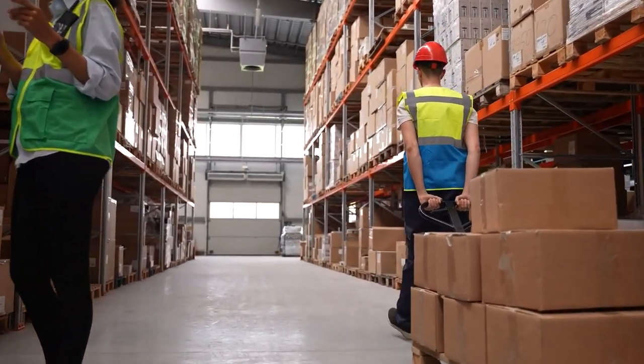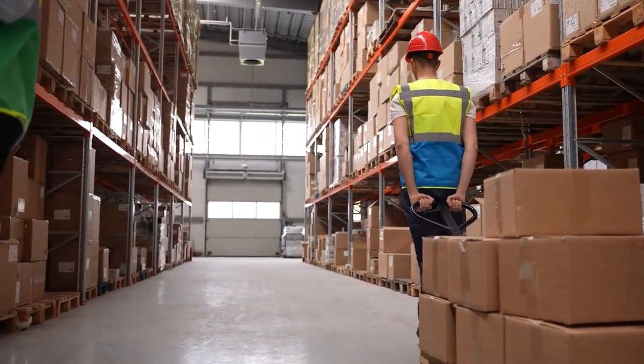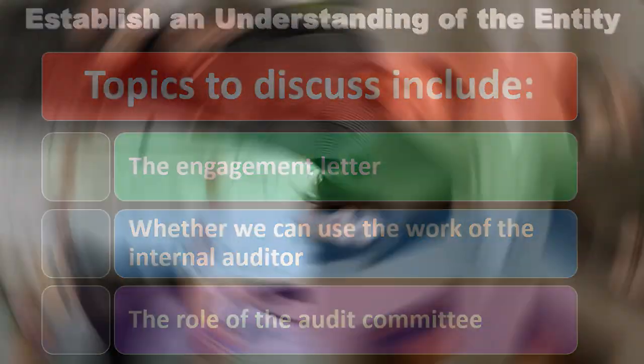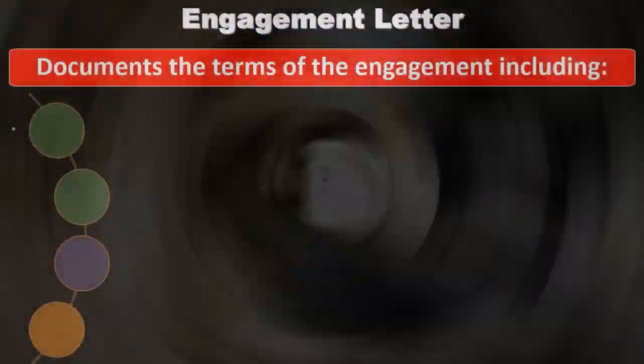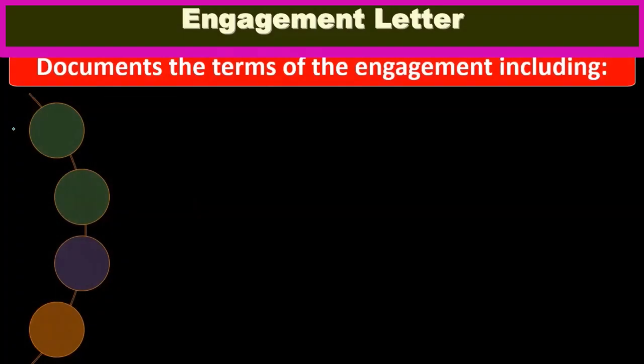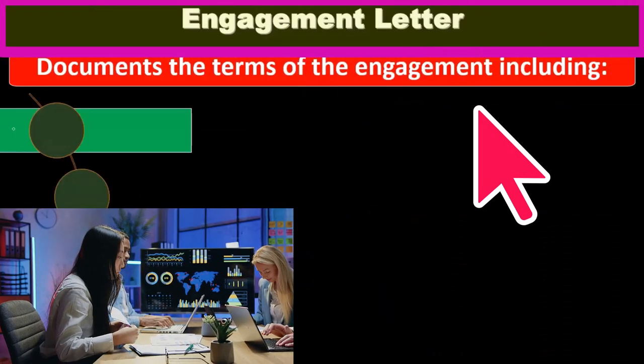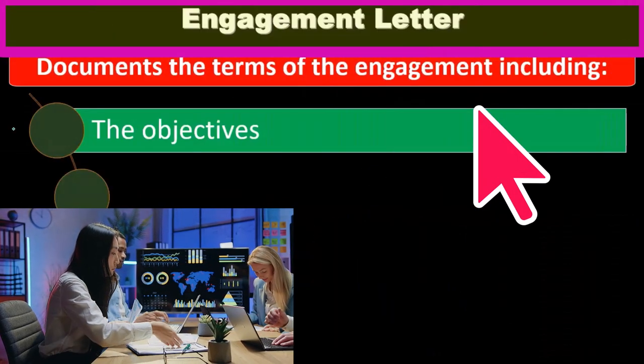The audit committee is a subset of the board of directors. The board of directors is voted on by the stockholders — the owners of the company — and they are in charge of hiring management. They are the people we will be talking to much of the time when considering, setting up, and reporting the audit process, and when we issue the audit report.